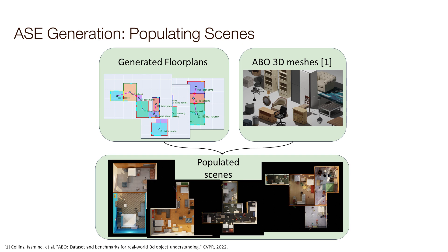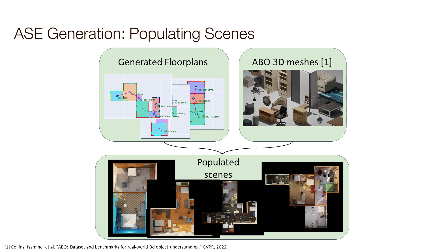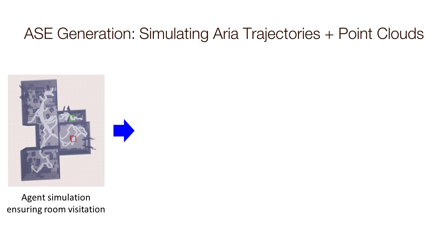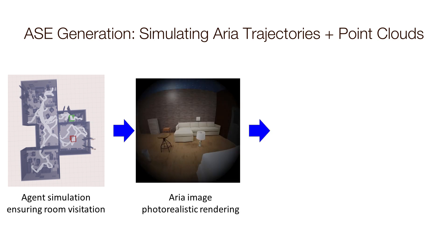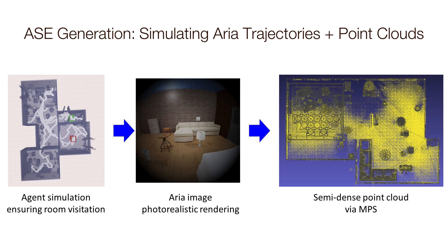From the Amazon Berkeley dataset, there are about 8,000 household object meshes, which is great since we're simulating houses. We populate these objects in a semantically plausible fashion using heuristics - for example, beds are placed against the wall since you'd rarely see a bed in the middle of a room, while chairs and tables are placed more centrally. Here are top-down renders of some of those houses. For trajectories, more heuristics ensure we visit each room sufficiently. We simulate ARIA sensor data including images at 10 Hz, then plug that into machine perception services. Here's a top-down visualization of semi-dense points, where more yellow indicates denser clusters.